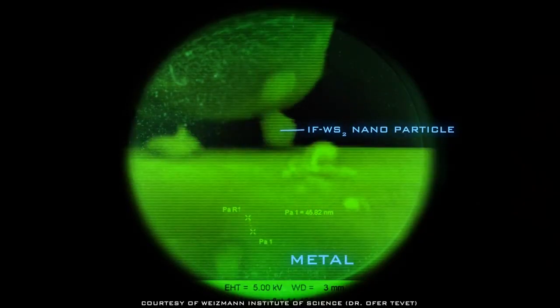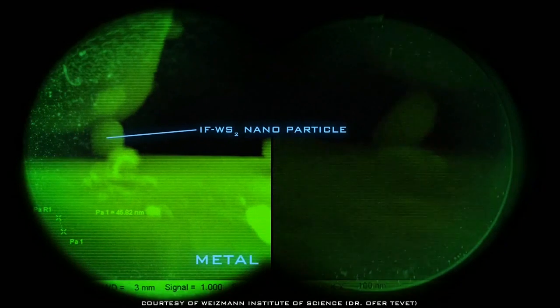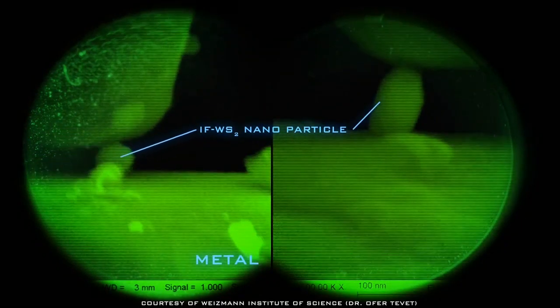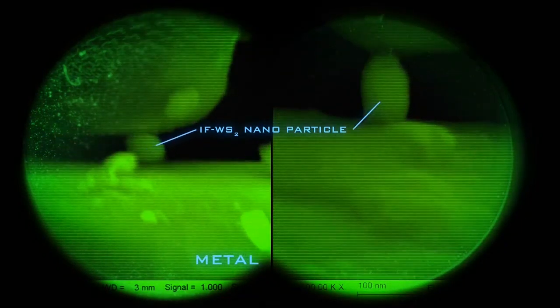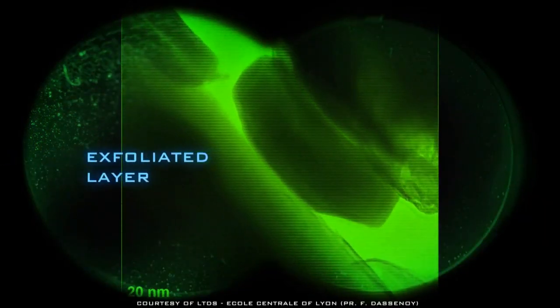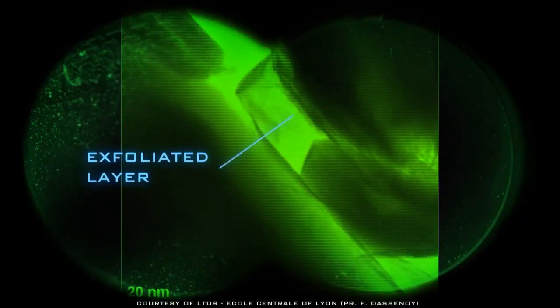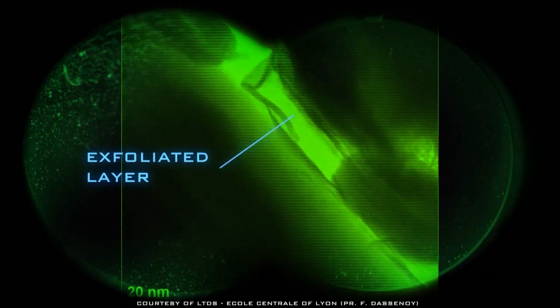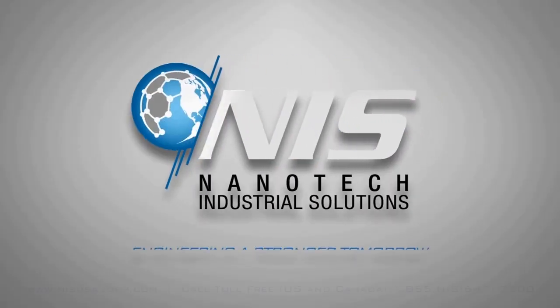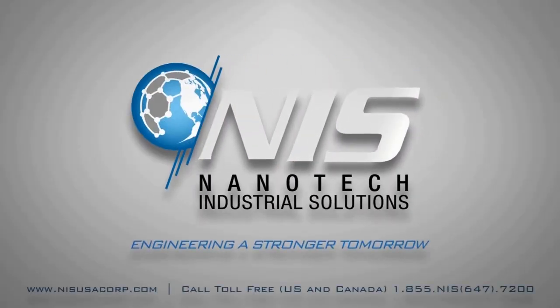Due to their size and morphology, the nanoparticles fill the asperities and irregular surfaces of the metal gears, providing excellent load-bearing and anti-wear properties. Under high loads, layers peel from the fullerene-like spheres, forming a protective monolayer on metal surfaces, reducing wear and friction. NIS, engineering a stronger tomorrow.